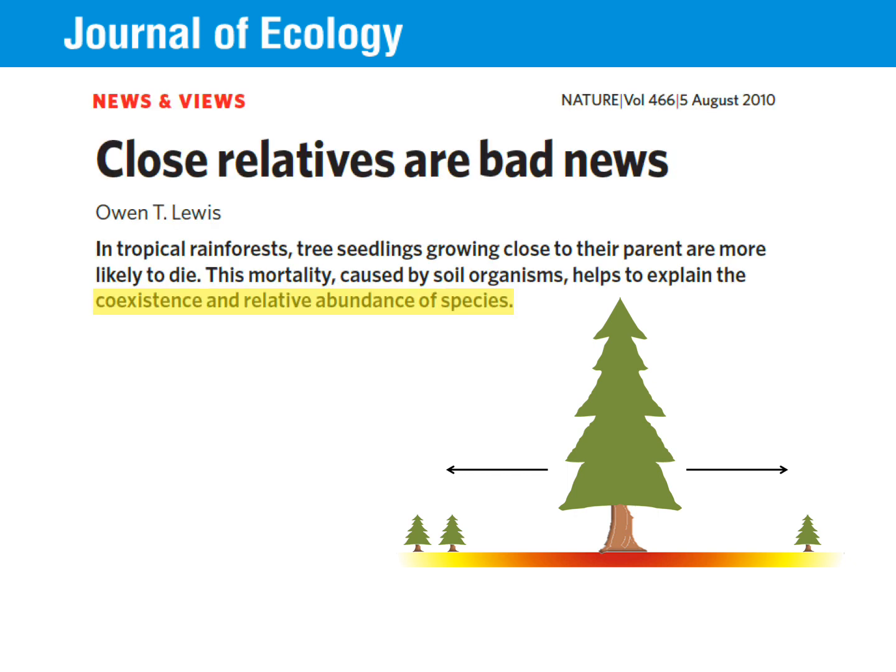The reason CNDD is important is that it's thought to be a natural mechanism that maintains high tree diversity. Ecologists have been studying this process since the late 1960s when Daniel Janzen and Joseph Connell independently published their observations of this phenomenon. You may also hear this process called the Janzen-Connell effect.